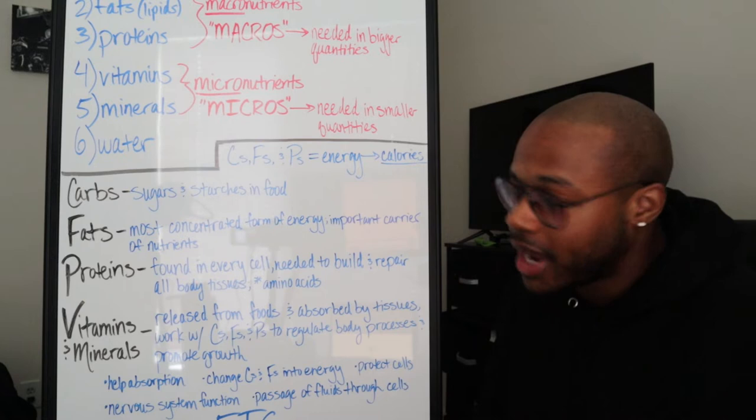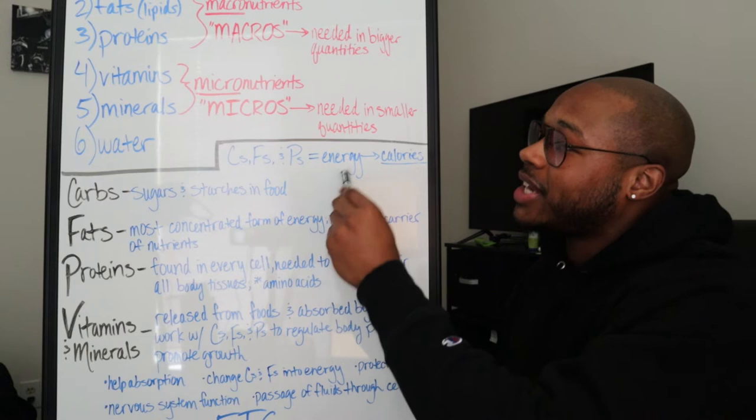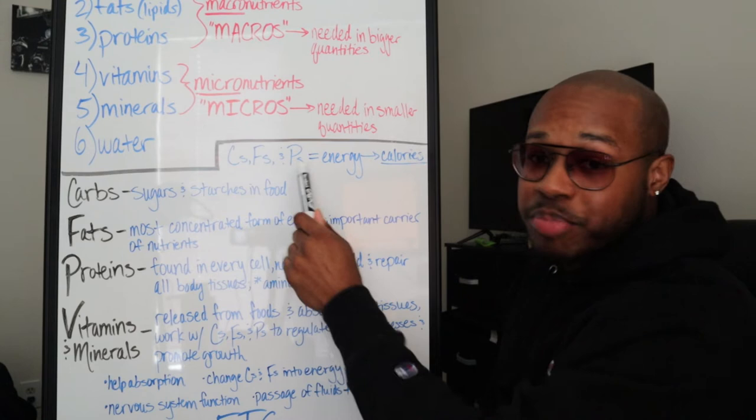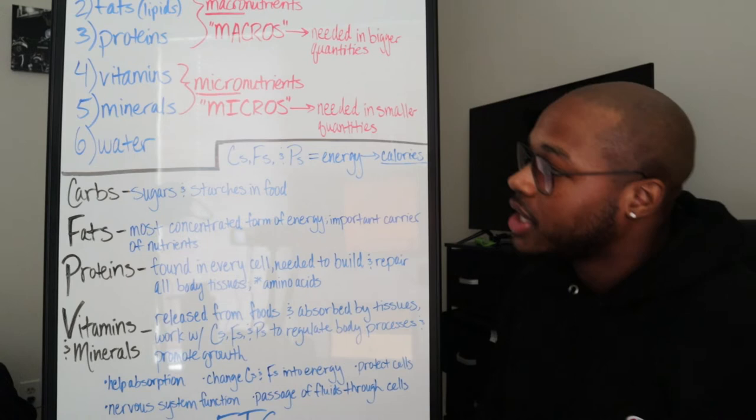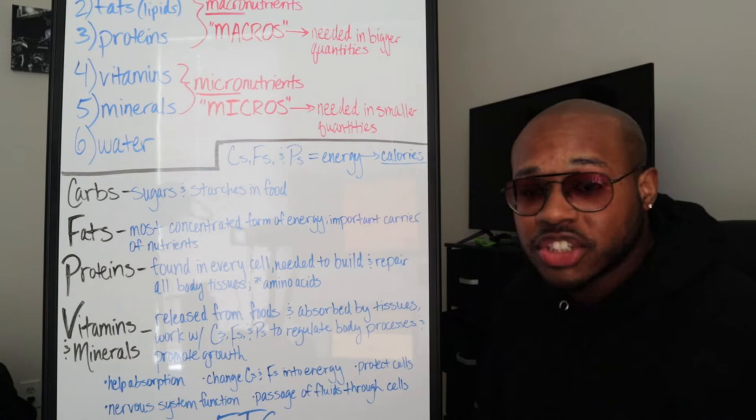Calories in, calories out. This is 200 calories, this is a thousand calories, I gotta eat 3,000 calories a day. This word here means energy, and where this energy comes from is carbs, fats, and proteins. So here I have C's, F's, and P's - that's just carbs, fats, and proteins which equal energy, which means calories. That's because carbs, fats, and proteins, your macronutrients, are your most abundant sources of energy and that's where your calories are gonna come from.